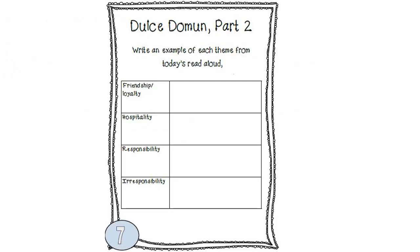Here is the listening journal, page seven. You would write the examples from today's read-aloud on there. You can also copy those over to your chart that you should be keeping on the different themes throughout the lessons. That is the end of lesson seven. Thank you, and enjoy the next lesson. Goodbye.